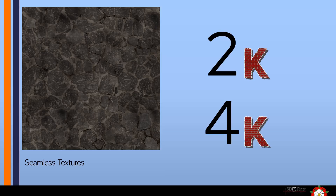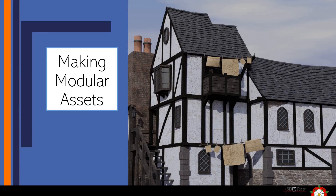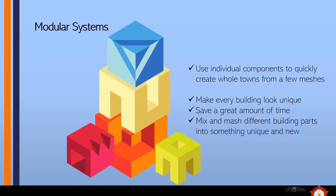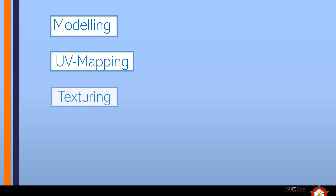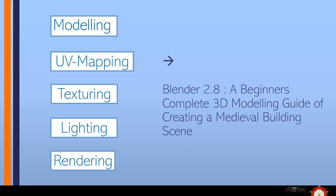Most of the textures are seamless and can be easily used in any assets you create in the future. When you download the textures you can choose between 2K or 4K textures depending on your scene and what your machine can handle. The course will teach you how to create modular assets like walls so you can use them to quickly create whole towns from a few meshes and make every building look unique. This saves you a great amount of time and lets you mix and match different building parts into something new. This course focuses on creating realistic, game-ready buildings all within Blender 2.8.